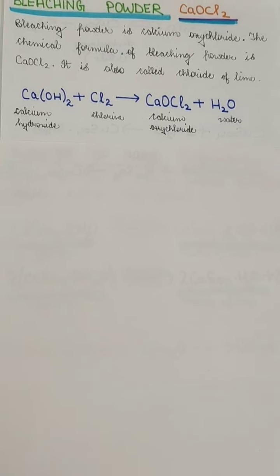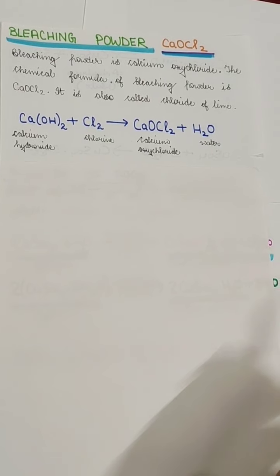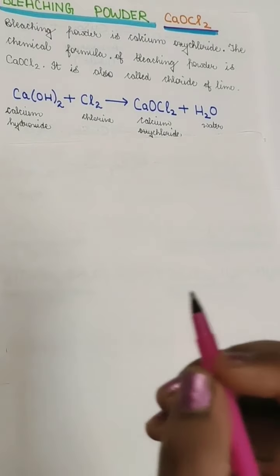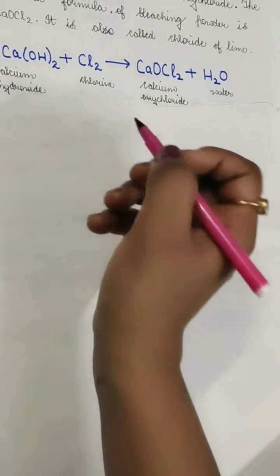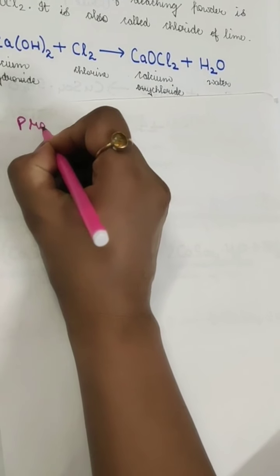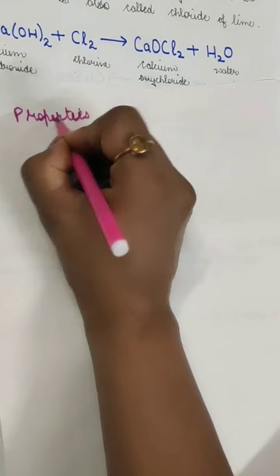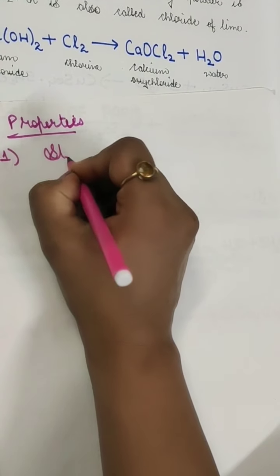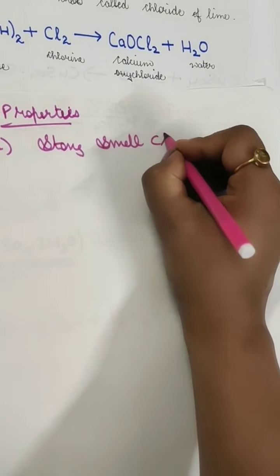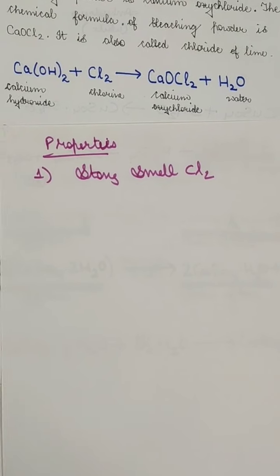The uses are given in your book. One important thing is the properties of bleaching powder. It has a very strong smell — specifically a strong smell of chlorine, because it is made from chlorine.